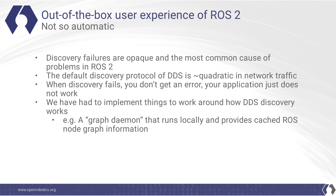As the number of nodes grows and the number of topics in particular grows — and as I mentioned, we have a lot of topics in ROS2 — the discovery traffic is very high. When discovery fails, you don't get an error; your application just does not work, but DDS is functioning as expected, which means there's no error to be produced. We've had to implement workarounds, such as a graph daemon that runs locally and provides cached ROS node graph information. Without this, the tools would often miss information from the ROS graph and be basically non-functional.